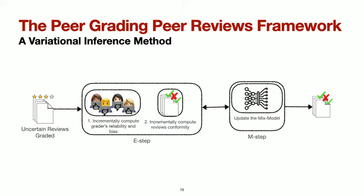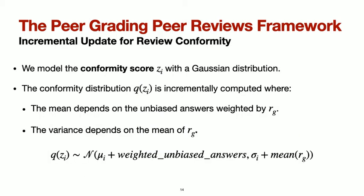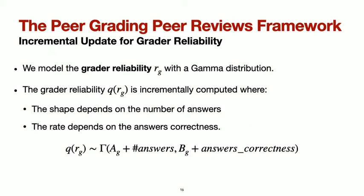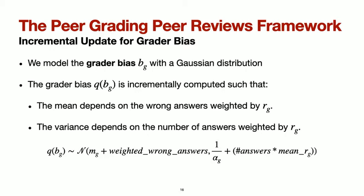In the E step, we model the conformity scores Z_I with a Gaussian distribution, updated such that the mean depends on the unbiased answers weighted by the worker's reliability, and the variance depends on the mean of the worker's reliability. We model the grader's reliability with a gamma distribution, updated such that the shape A_G depends on the number of answers and the rate B_G depends on answer correctness. We model the grader bias with a Gaussian distribution, where the mean depends on wrong answers weighted by worker's reliability. We show in our paper the proof for all these results.